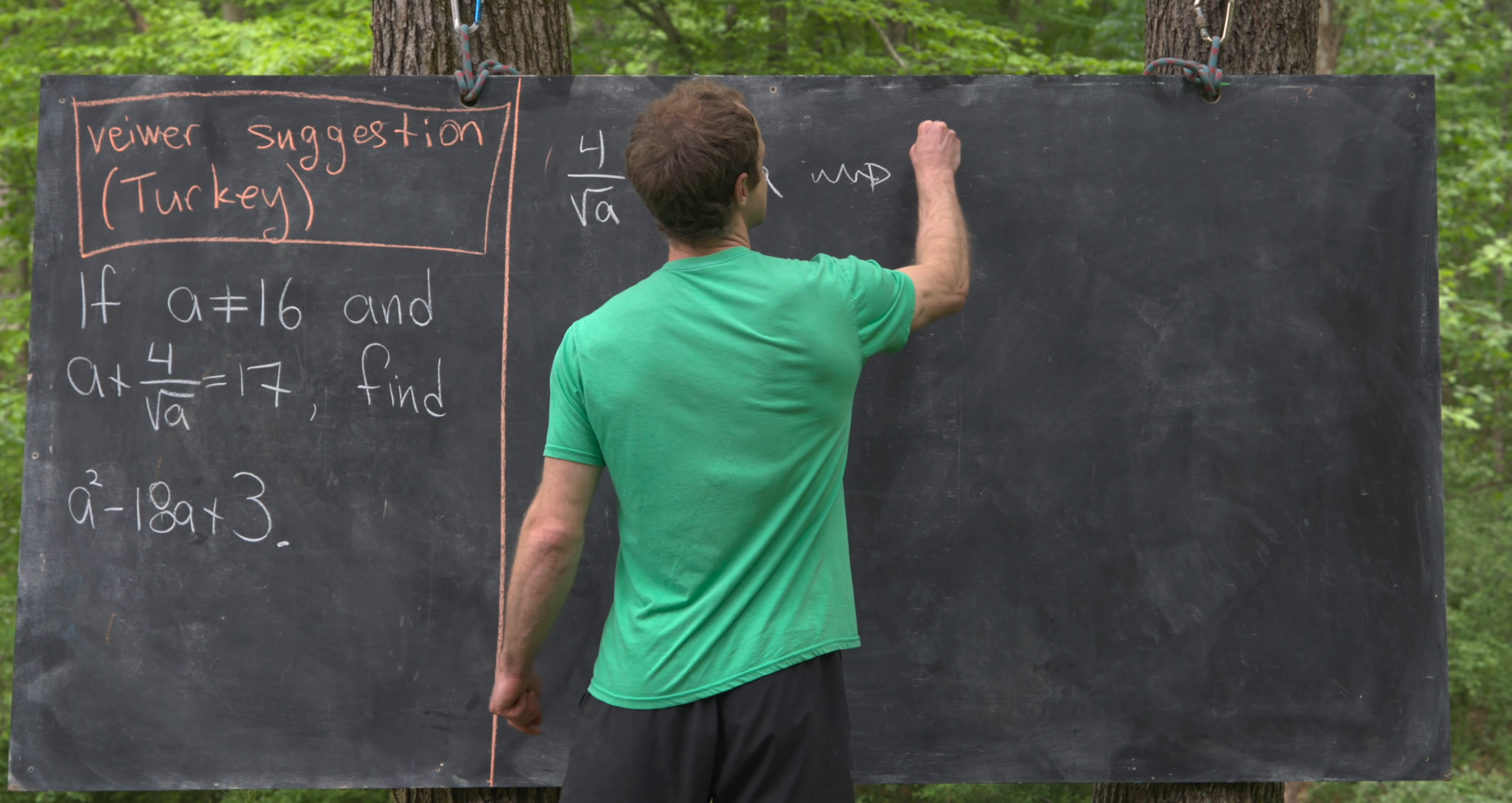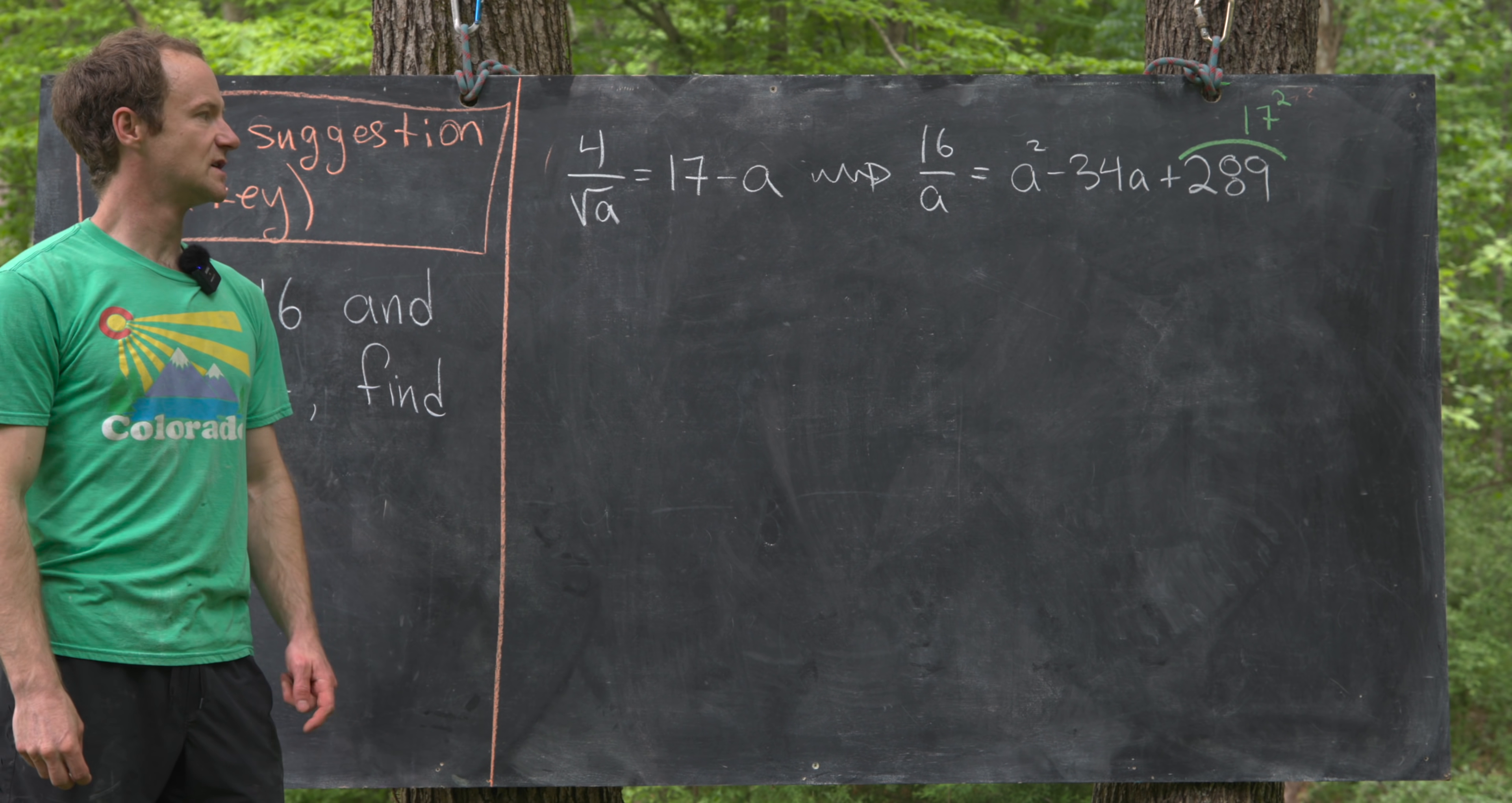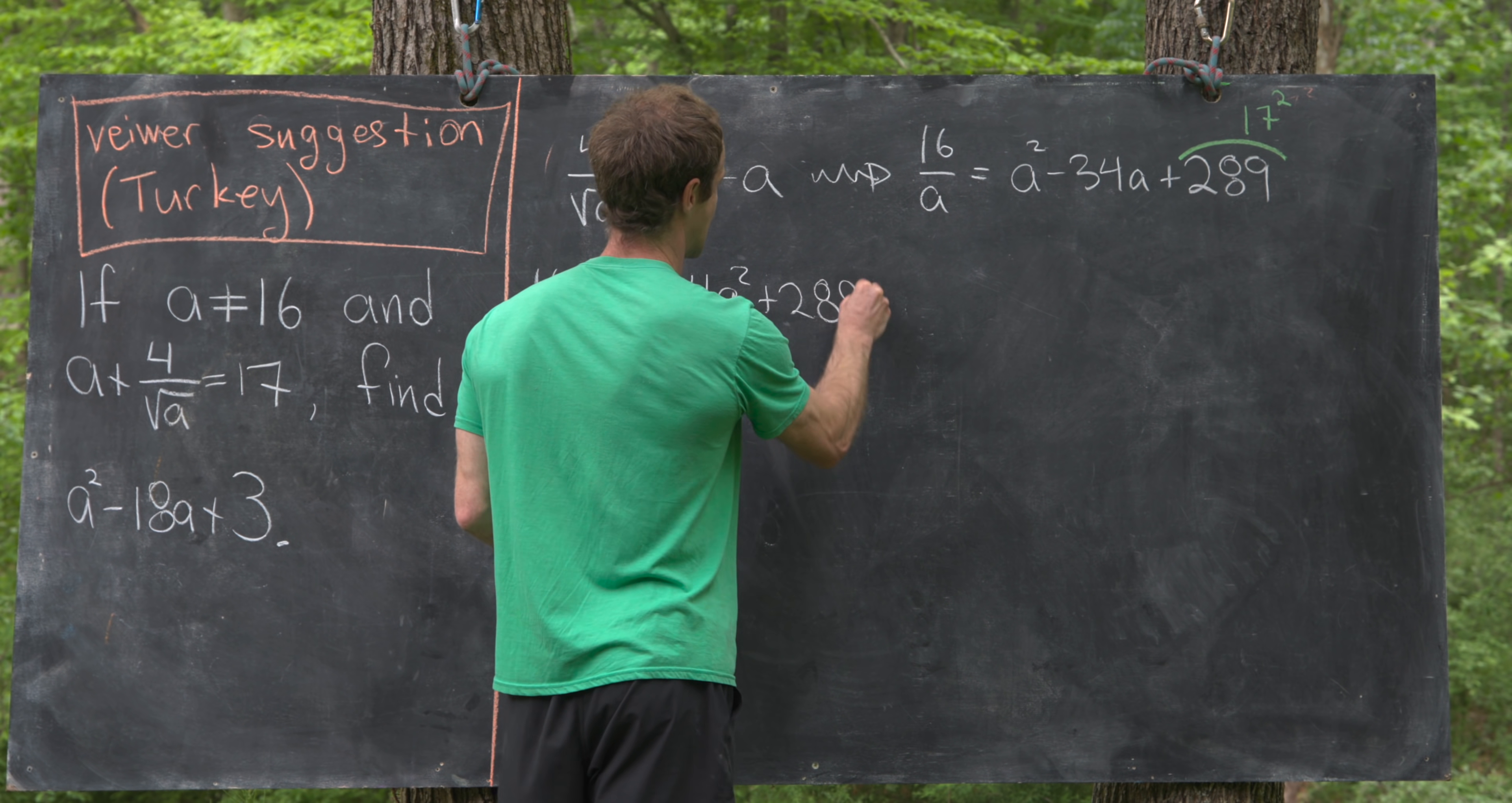So let's say we square it. That's going to give us 16 over a equals a squared minus 34a plus 289. And I want to point out here that this 289 is 17 squared. So that's how we got that number. Next, what we'll do is multiply both sides of this equation by a, so we have a polynomial expression, which is essentially what we're going for.